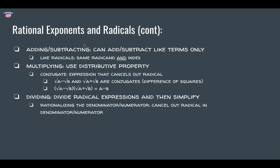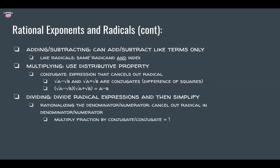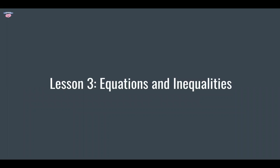The conjugate is a special expression that cancels out radicals: root a minus root b and root a plus root b are conjugates. Using difference of squares, multiplying them gives a minus b with no radicals. To divide, use the radical rules and simplify. A special case is rationalizing the denominator — for example, 2 over (root 7 minus 1): multiply top and bottom by the conjugate (root 7 plus 1), giving (2 root 7 plus 2) over (7 minus 1), which is (2 root 7 plus 2)/6, simplified to (root 7 plus 1)/3. That's it for the Algebra 2 and Pre-Calculus review — see you next time!